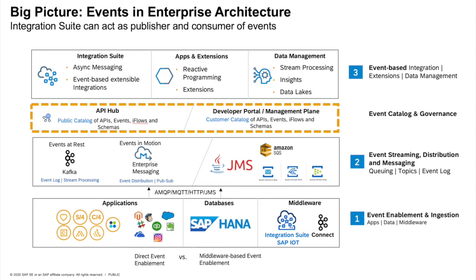The third layer is the consumption experience. Integration Suite and middleware can be thought of as consumers of these events, or events can be consumed by data lakes, extension suite, and so on. Coming to the event catalog: if you go to api.sap.com or API Business Hub, you can see a lot of events which SAP has exposed so that you can directly consume them in your different portals, such as the API management portal. Similarly to how we have APIs in API Business Hub, we also have events. You can go and explore api.sap.com right now.